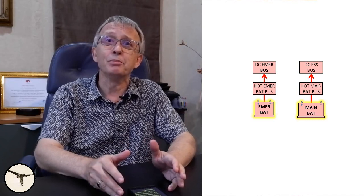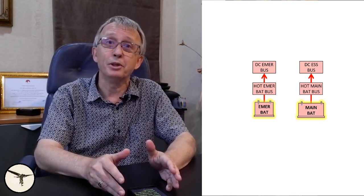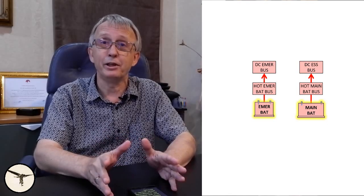The emergency battery is smaller than the main battery and powers the hot emergency battery bus and the DC emergency bus. Some systems powered by the emergency bus are standby horizon, VHF radio number one, transponder number one, and the trims. In other words, it enables you to fly the aircraft.